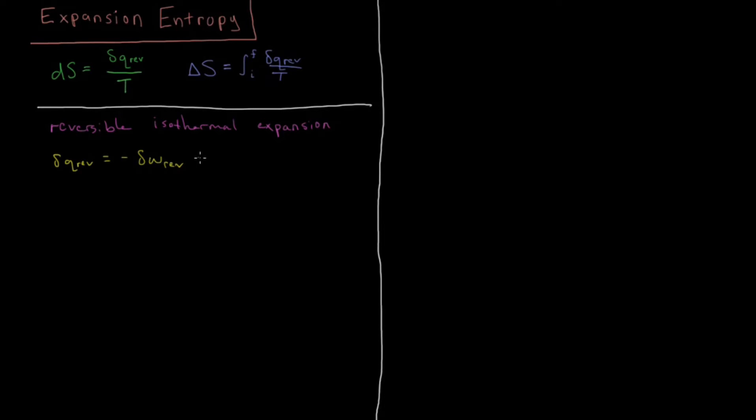So we have minus this reversible work, and the reversible work is minus nRT over V dV. So negative of a negative gives a positive, so we get nRT over V dV. If we change our volume by a tiny amount, this is the negative of how much work we did, and that is how much heat we will input into the system as a result.